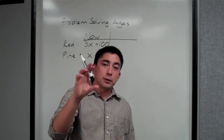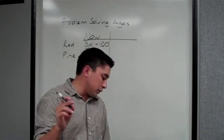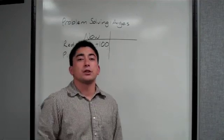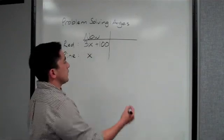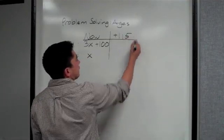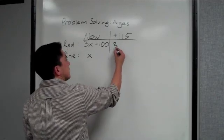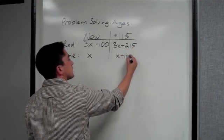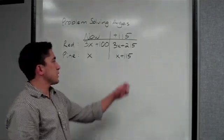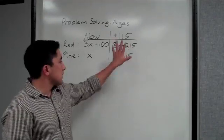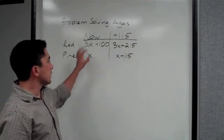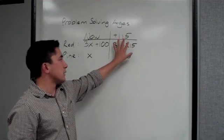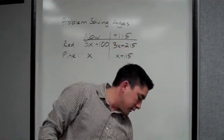Now if you look at number eight, it continues that problem. It says suppose that in 115 years, so again, in 115 years, that means we're going to add 115 to both ages. So this becomes 3X plus 215, this one becomes X plus 115. Add 115 to both of those numbers. Now these are the values we're going to use to set up our equation. Never use the now column to set up the equation. Always use the plus whatever, minus whatever for setting up the equation.